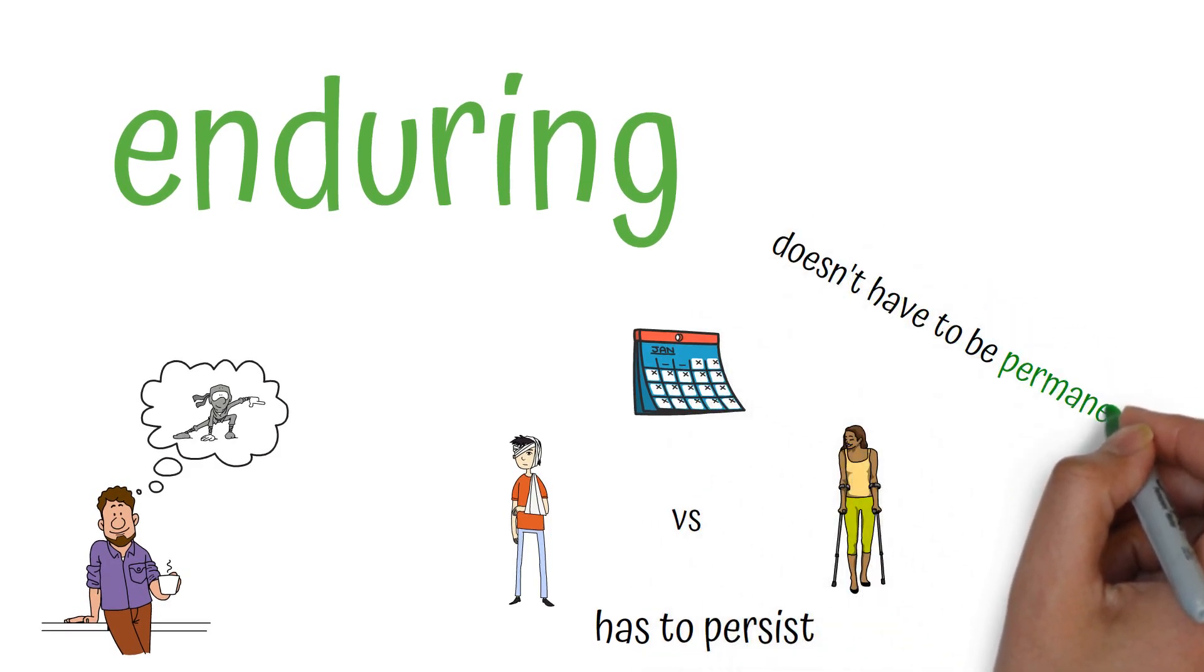Now this doesn't have to be permanent for it to count. Kuhn suggests the example of a person who's blind for 30 years but who has a surgical procedure so he can see. He was disabled before the surgery, but is not afterward.